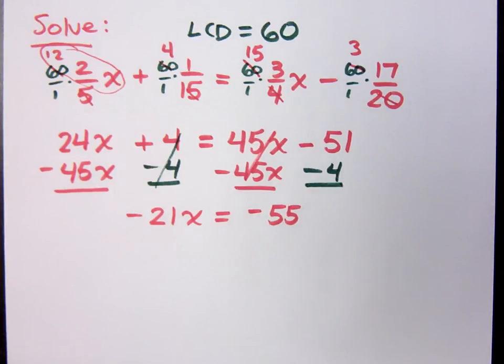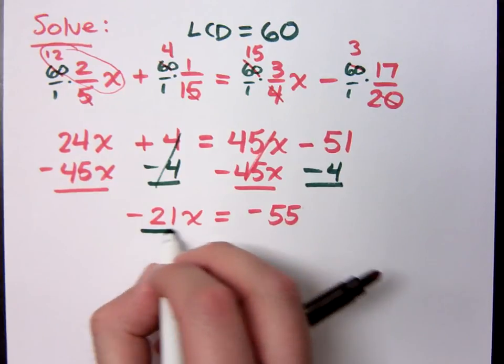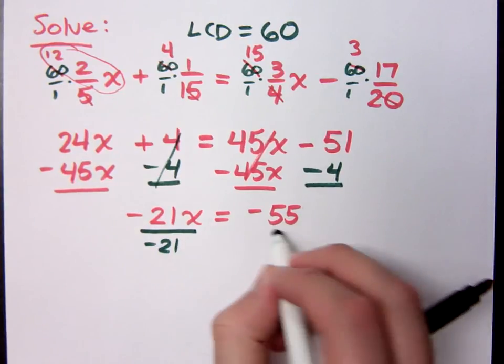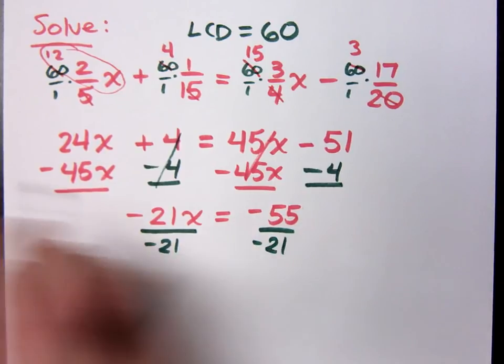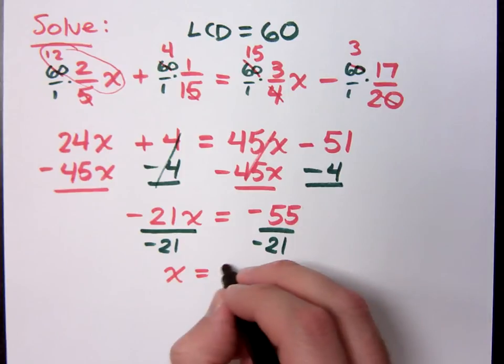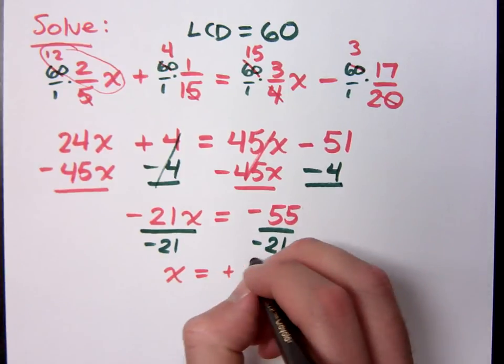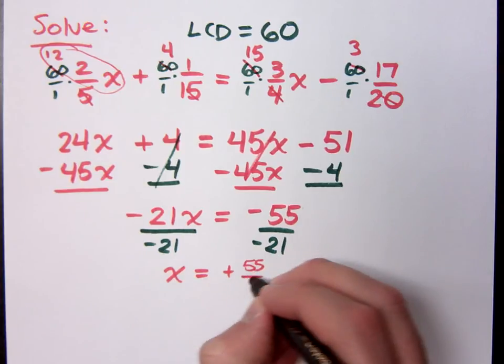So what do I do now? Divide by negative 21 on both sides. So what does x equal? 55 over 21. Positive, right? Negative divided by negative is positive. Positive 55 over 21.